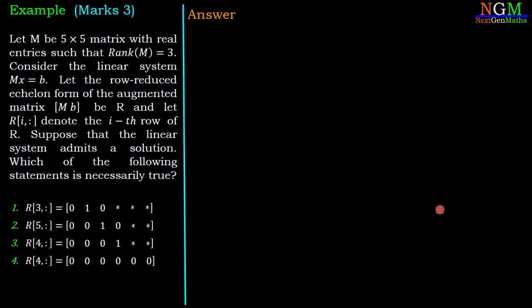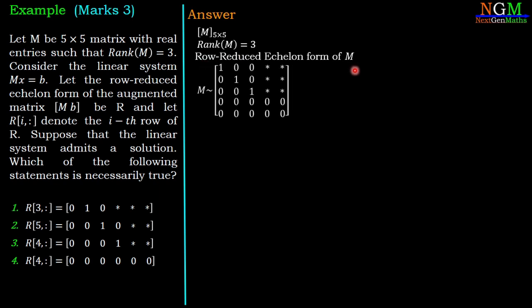Here we are given that the matrix is of order 5 × 5, and rank(M) = 3. Therefore, the row-reduced echelon form of M will be [1 0 0 * *; ...